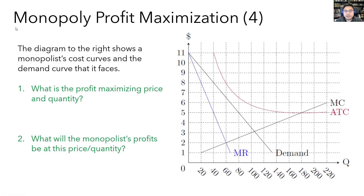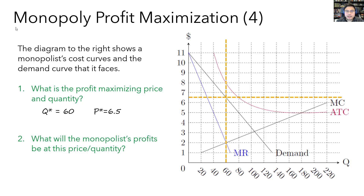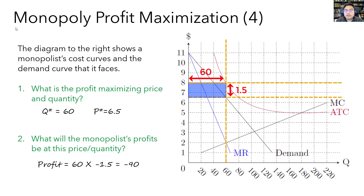Let's do one more example. Again, I'm showing a monopolist's demand curve and cost curves, asking you to find the profit maximizing quantity, price, and profit. MR equals MC right here, so the profit maximizing quantity is 60, and the price at Q equals 60 is up here at P equals 6.50. One thing to notice is that in this case the ATC is actually above the price, so the monopolist is actually going to be losing money. The height of the rectangle is 1.5 and the width is 60, so the profit is actually negative 90 — a loss of 90. This shows that even a monopolist could lose money if costs are very high relative to demand.